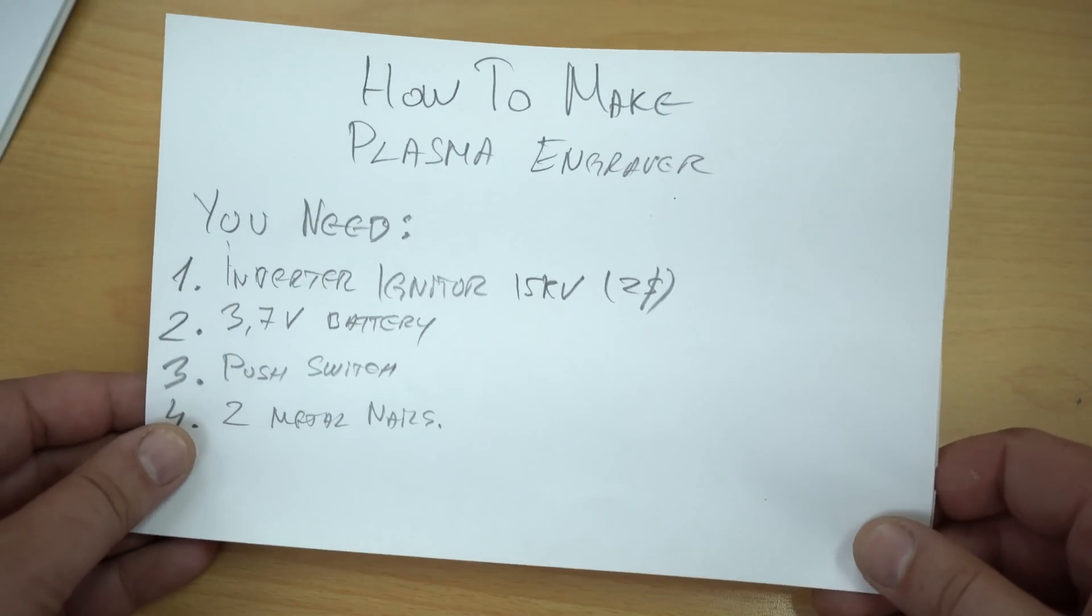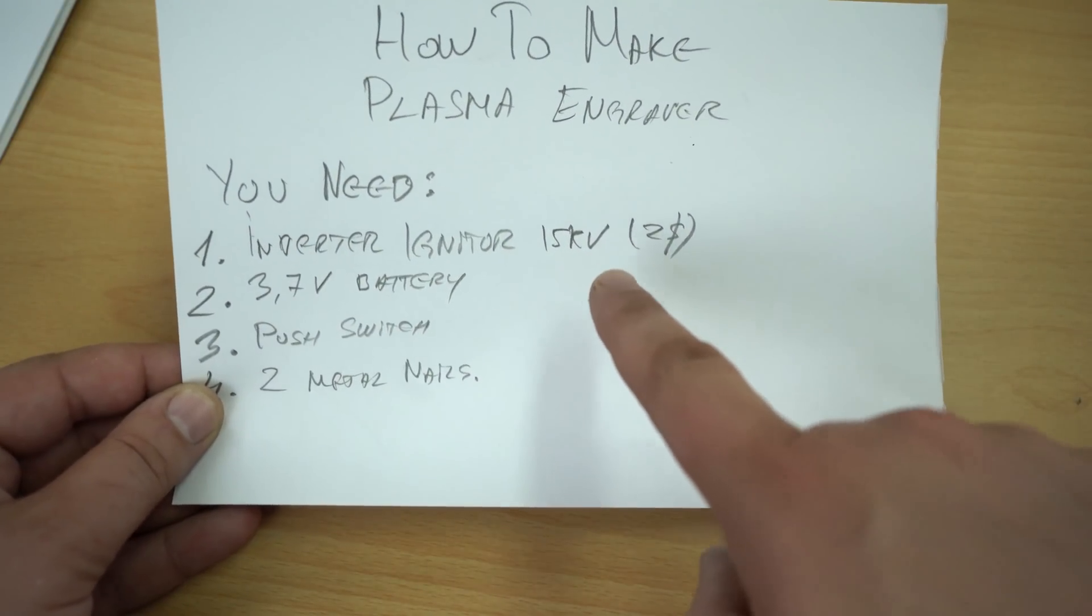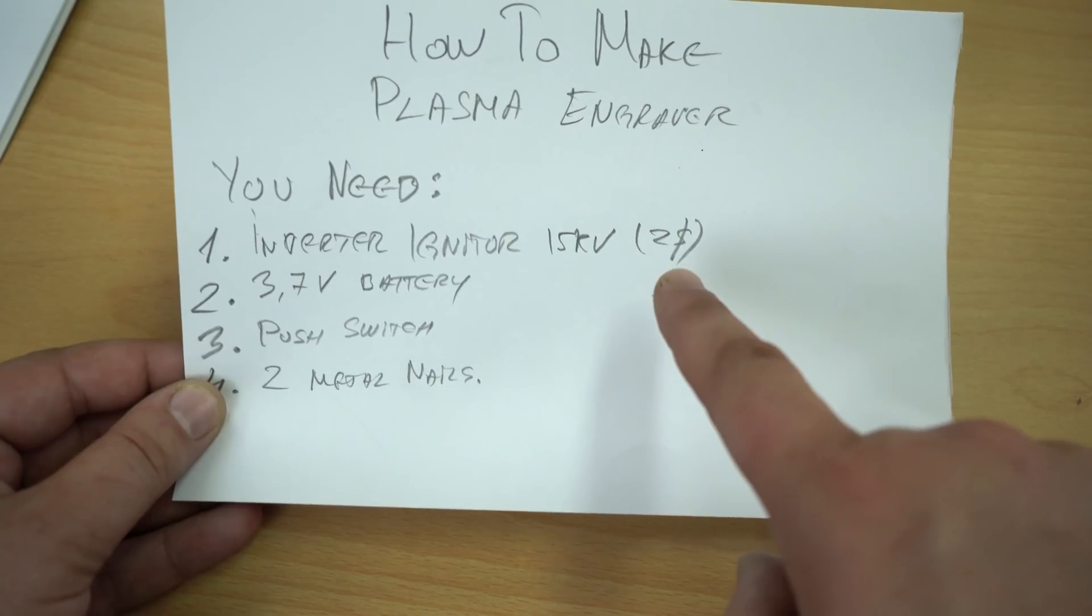How to make a plasma engraver. You will need an inverter igniter kit, 15 kilovolts, that costs around two dollars from eBay.